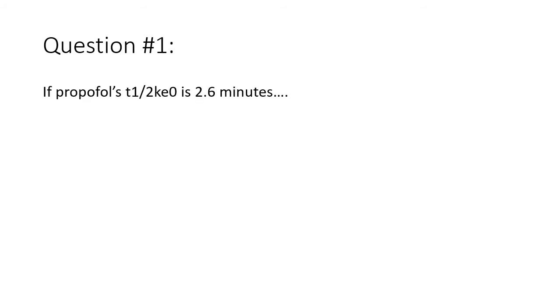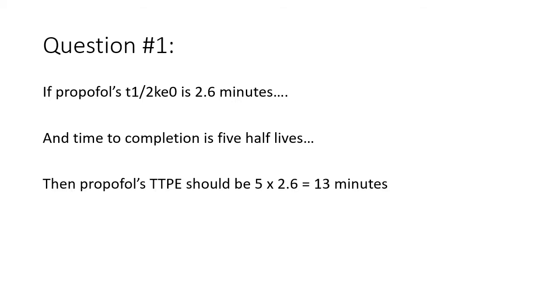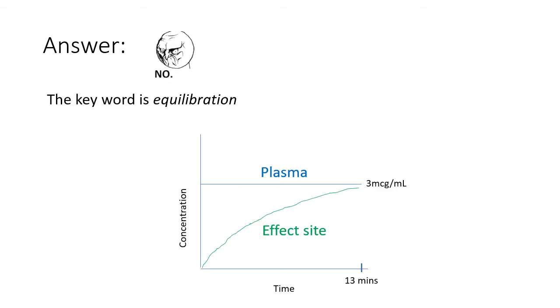Let's try to apply this concept. If propofol's T half KE0 is 2.6 minutes, and if time to completion of an exponential process is 5 half-lives, then that should mean that propofol's time to peak effect should be 5 by 2.6, which equals 13 minutes. Clearly that's not the case. The reason that's not the case is that the key word in this situation is equilibration.